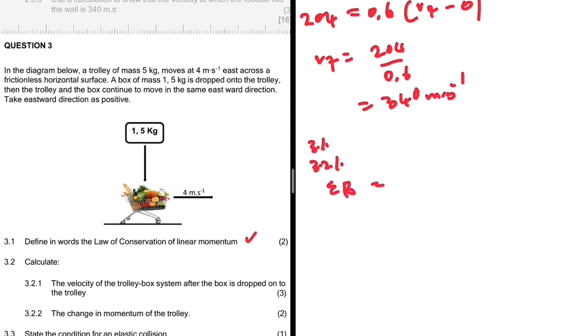The sum of the momentum before is equals to sum of the momentum after, right, after the box has been dropped down to the trolley.